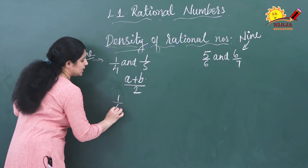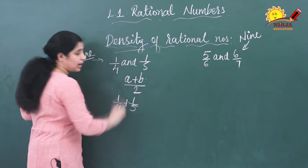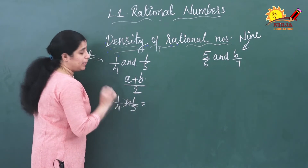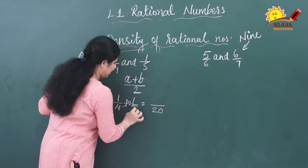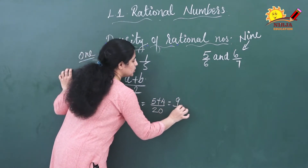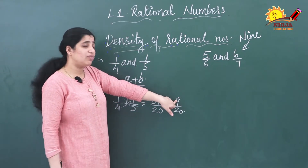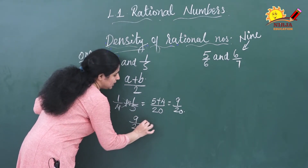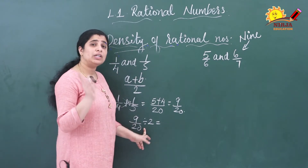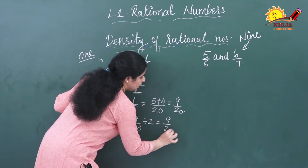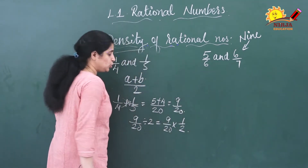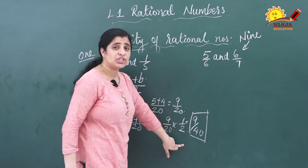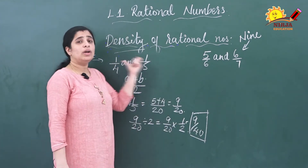I am going to add these two numbers: 1/4 plus 1/5. You know that these two are co-prime numbers, so there is no need to find the LCM — you can directly do it by cross multiplication. 4 fives are 20; 5 plus 4 equals 9, so the result is 9/20. Now you have to divide this by 2, that is (a + b) / 2. So 9/20 divided by 2, which means multiplying by the reciprocal: 9/20 × 1/2 = 9/40. So 9/40 is the rational number between 1/4 and 1/5.